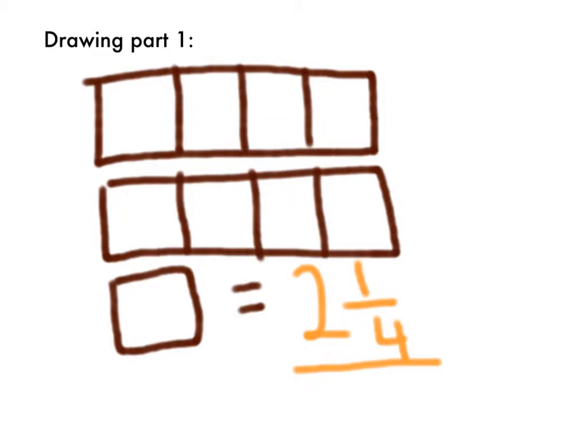So here's our drawing part one. I have my two bars of chocolate and I've cut them up into fourths, but then I still have a fourth remaining.